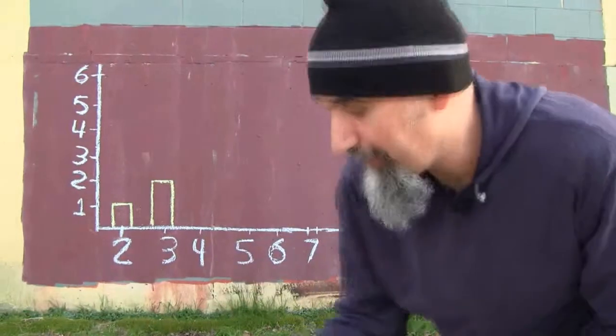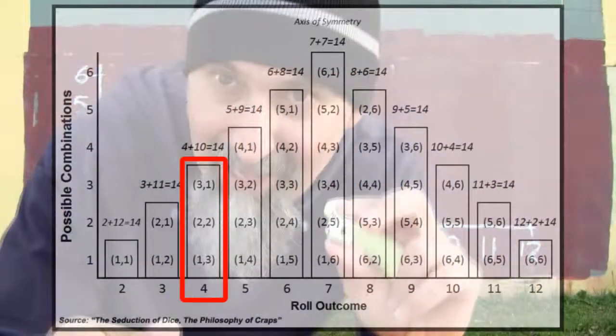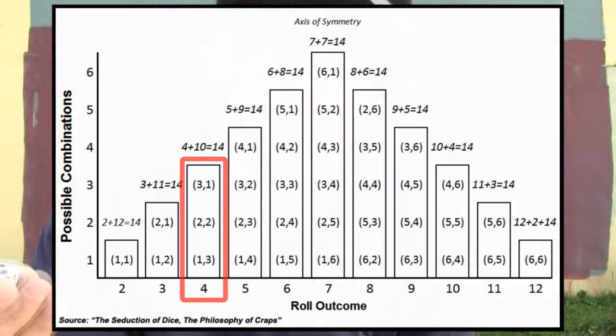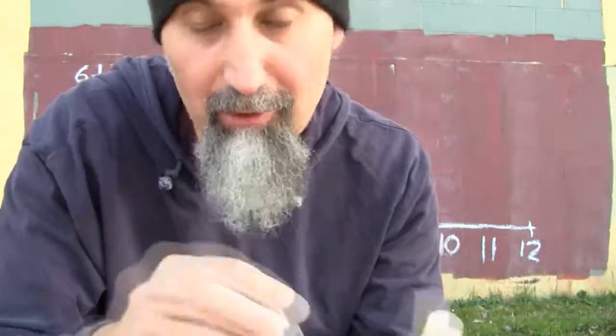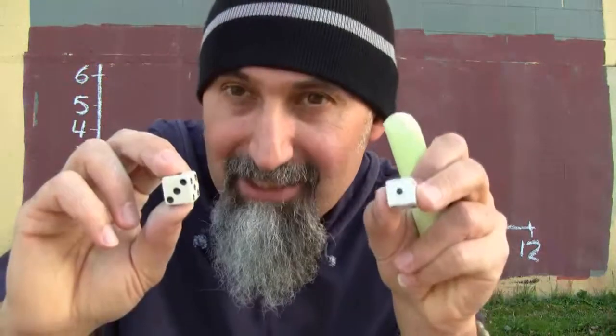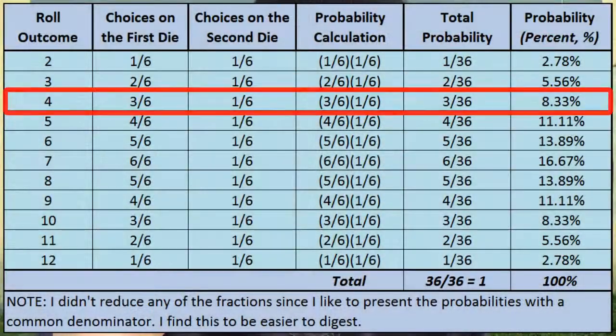To get a number four, you can get a one, a two, or a three on the first die, and on the second die you have to match. If you get a one on the first die, you need a three on the second die. If you get a two, you need a two. If you get a three, you need a one. There are three possible combinations, and the probability is three out of six times one out of six, which is three out of 36.